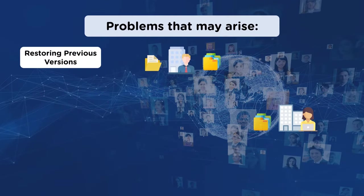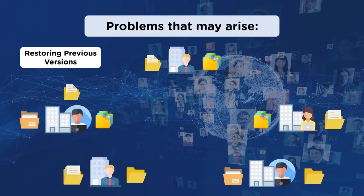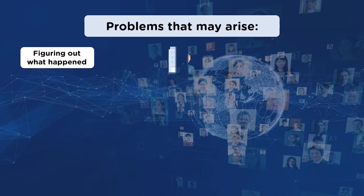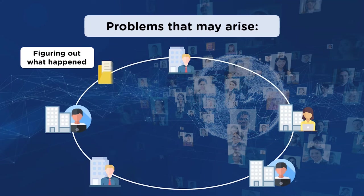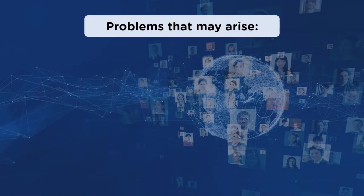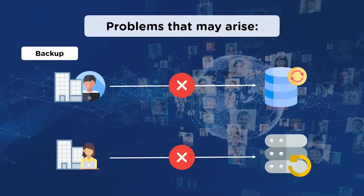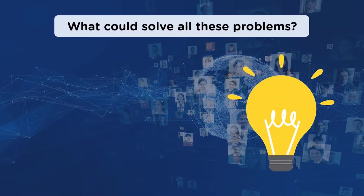Another problem is restoring previous versions — sometimes it is important to go back to previous versions to find the root cause of any bug. One more common challenge is to figure out what happened: it is critical to know what changes were made to the previous version of the source code, or exactly where changes were made in a file. Then there is the problem of backup — if the system or disk of a user breaks down and there is no backup, all efforts will go in vain.